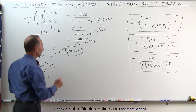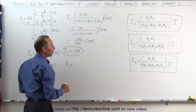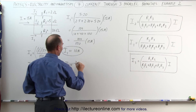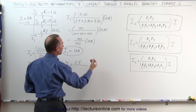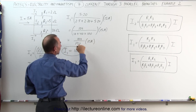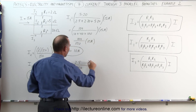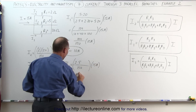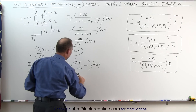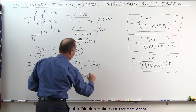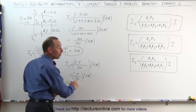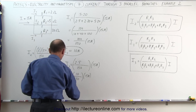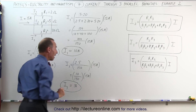And finally, we can find I3, which is equal to the product of the resistors of the other two branches, R1 and R2, which is 2 times 5, divided by the denominator — which is always going to be the same, a total of 150 — multiplied times the 15 amps. This is equal to 10 divided by 150, multiplied times 15 amps. Of course, 15 amps divided by 150 is one-tenth times 10, which is equal to 1 amp. So the current I3 is equal to 1 amp.